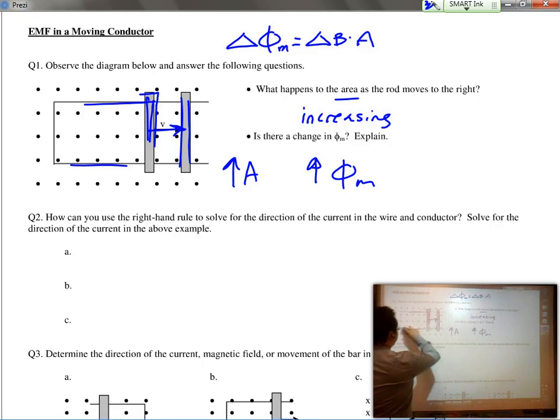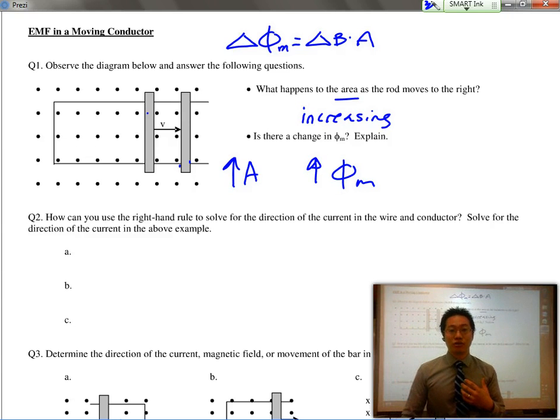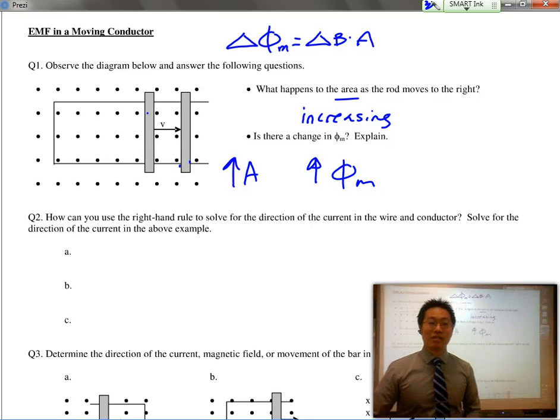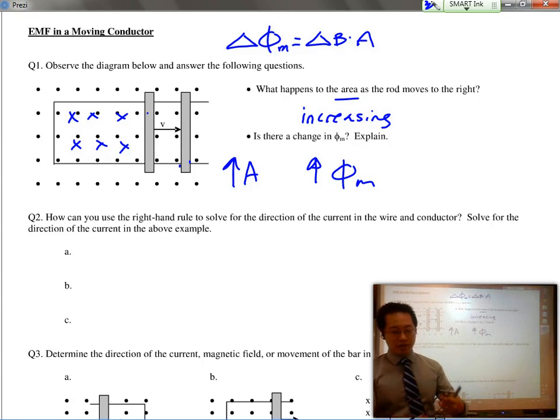So, if we were to actually try to figure this out, as the flux is increasing, as the bar is moving over to the right, that means that the loop is going to try to counteract that strengthening flux. It's going to create its own flux in the opposite direction. So, as the flux is increasing, the loop will try to work against it.